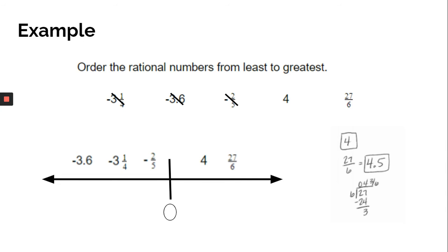So our order from least to greatest would be negative three and six-tenths, negative three and one-fourth, negative two-fifths, four, and then twenty-seven-sixths.